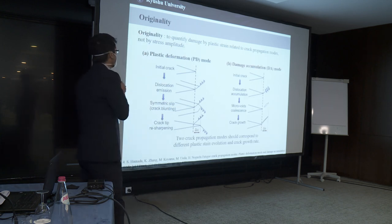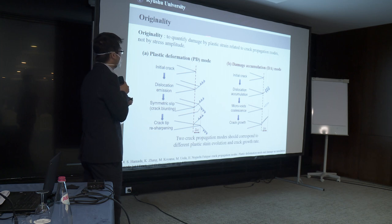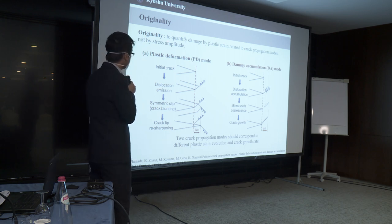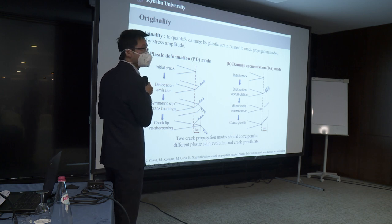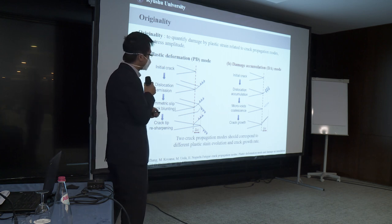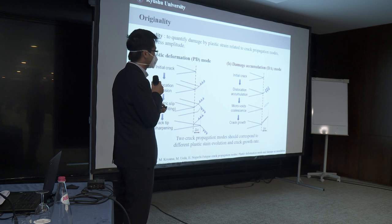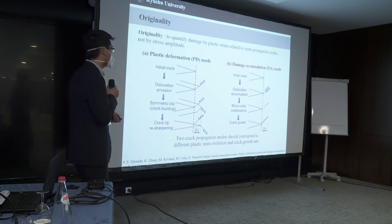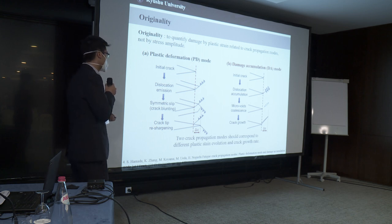So my originality is to try to quantify the damage plastic strain related to these two crack propagation modes, plus deformation mode and damage accumulation mode, instead of by stress amplitude. These two modes, the difference between these two is the first one is caused by crack tip deformation, blunting and resharpening. And this one, the crack propagation is caused by the coalescence between micro voids or micro cracks and the main crack and then get a crack propagation. So these two crack propagation modes should correspond to different plastic strain evolution and also different crack growth rate.